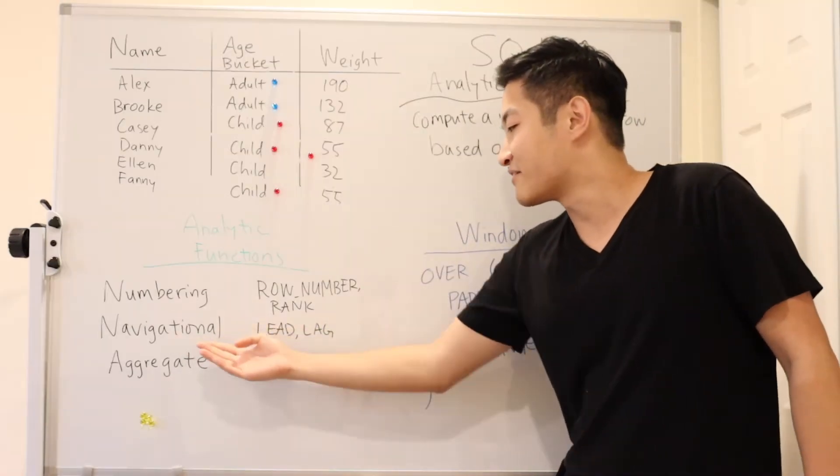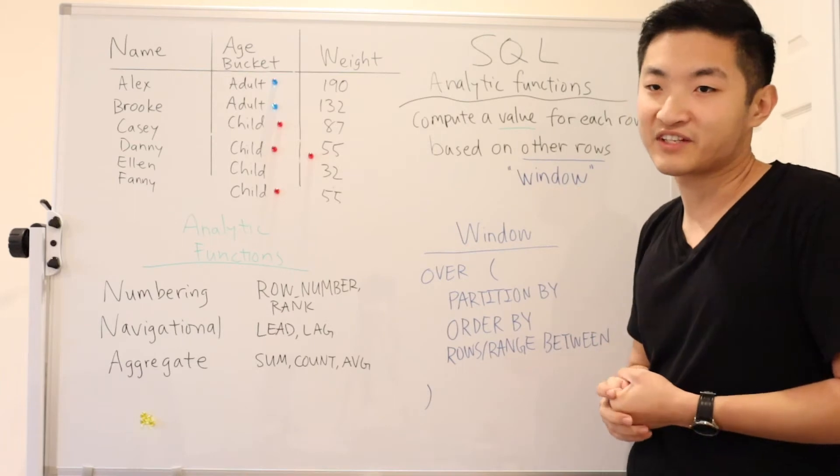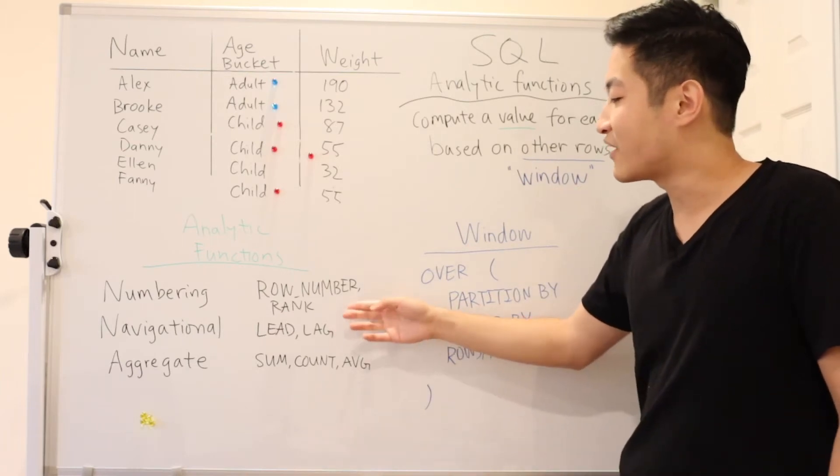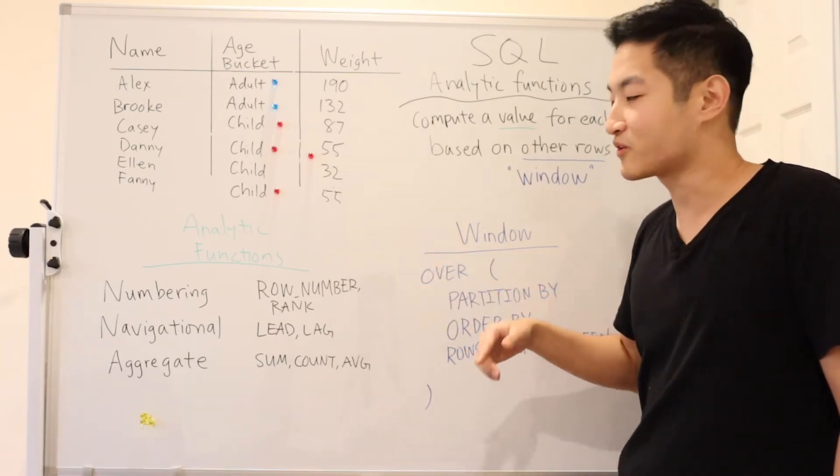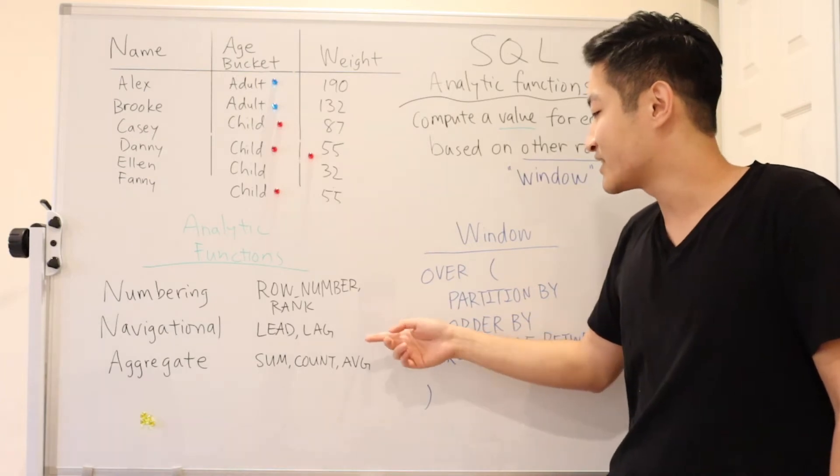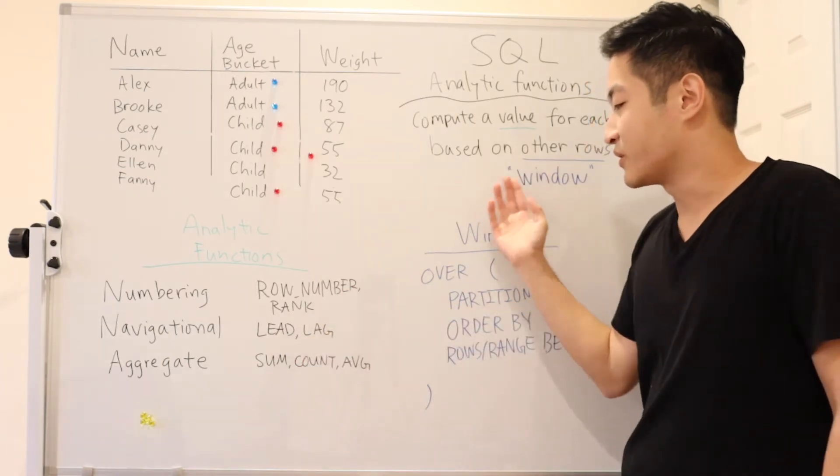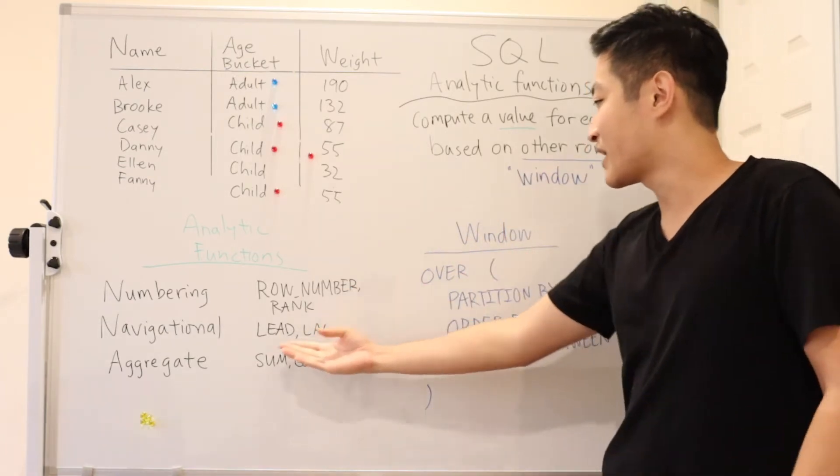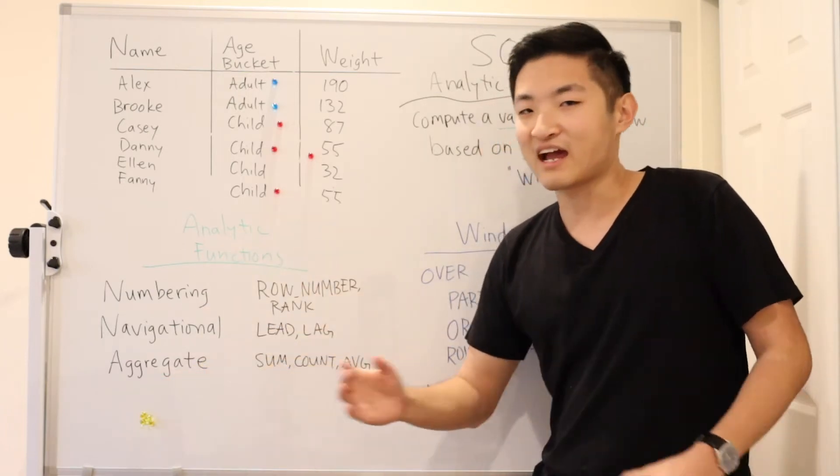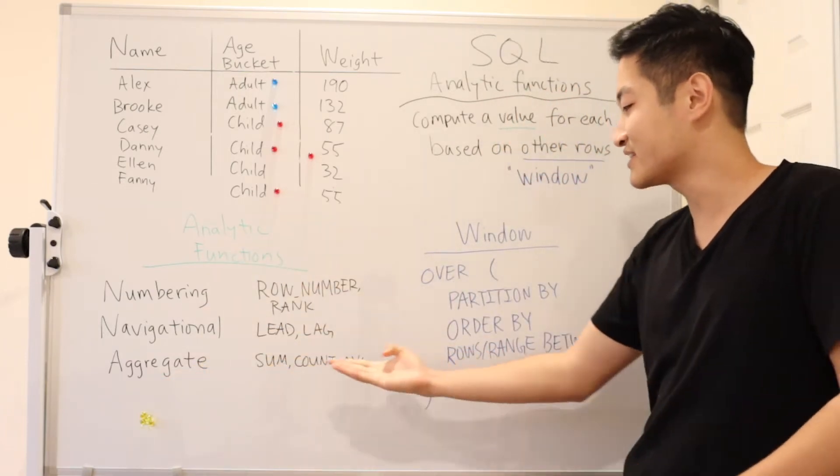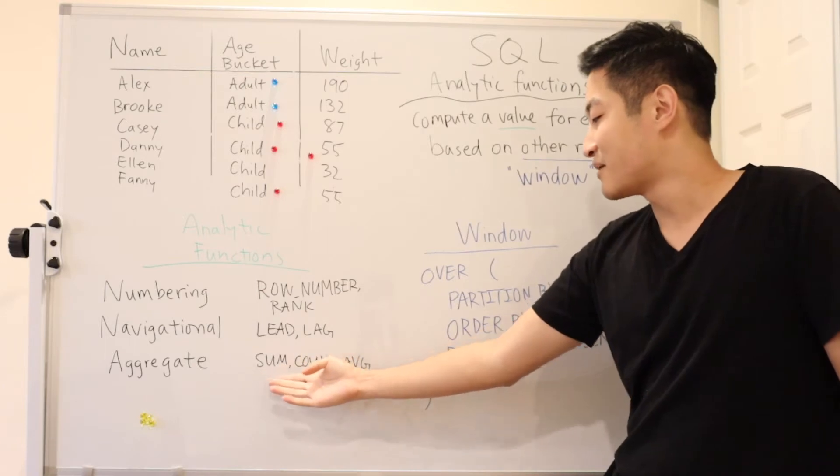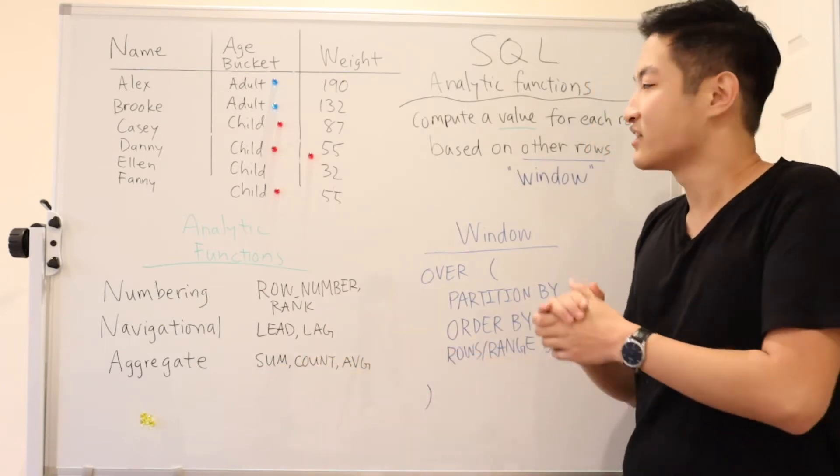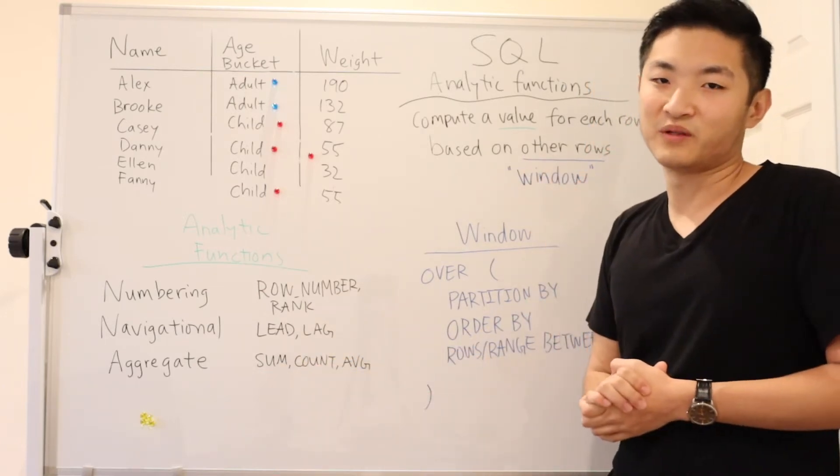The second type is navigational. So with navigational functions, you can look up values of the following or the preceding row in your window. And then the third type of analytic function is aggregate analytic functions, and these look familiar. You can sum, count, or average the window that the row belongs to.